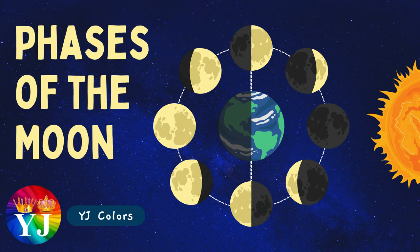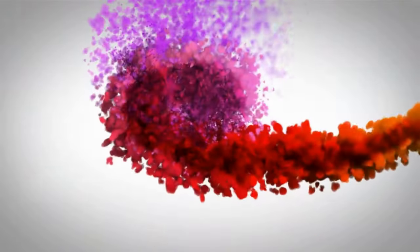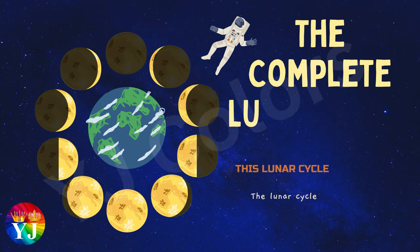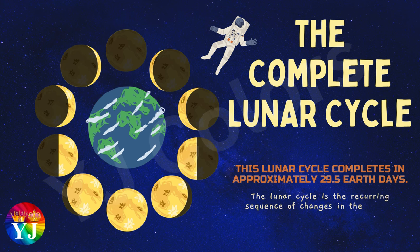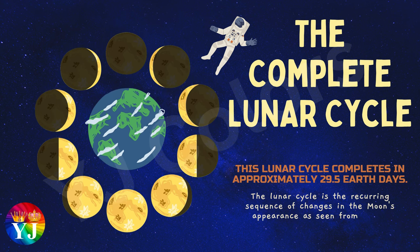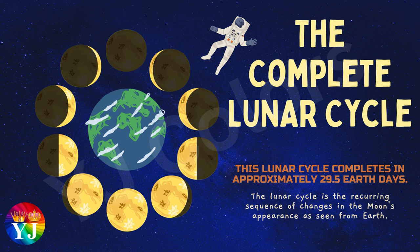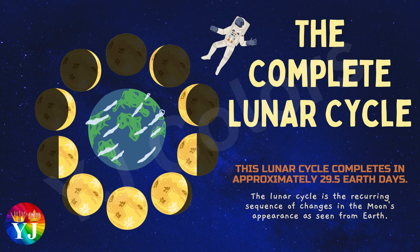Phases of the Moon. The Complete Lunar Cycle — this lunar cycle completes in approximately 29.5 Earth days. The lunar cycle is the recurring sequence of changes in the Moon's appearance as seen from Earth.